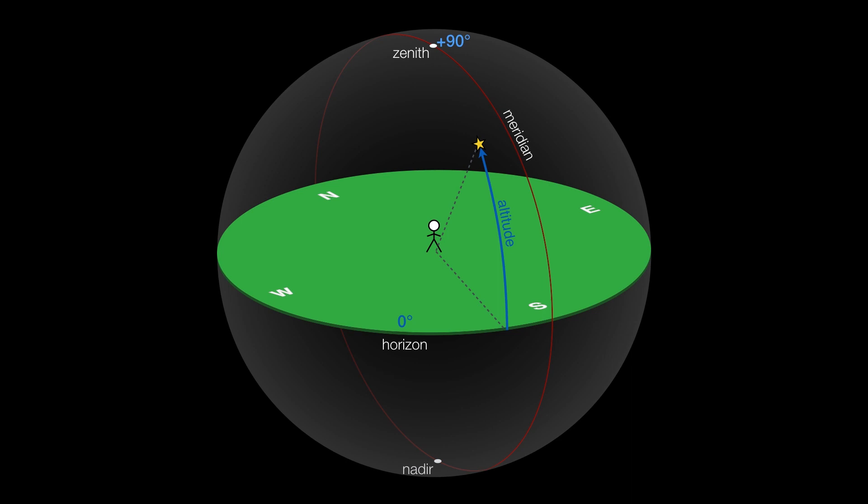And if we want to consider an altitude that is below the horizon, in other words, say for a star that has already set or hasn't risen yet, we would begin at zero degrees at the horizon and then use negative values of the altitude until we reach the nadir at minus 90 degrees.